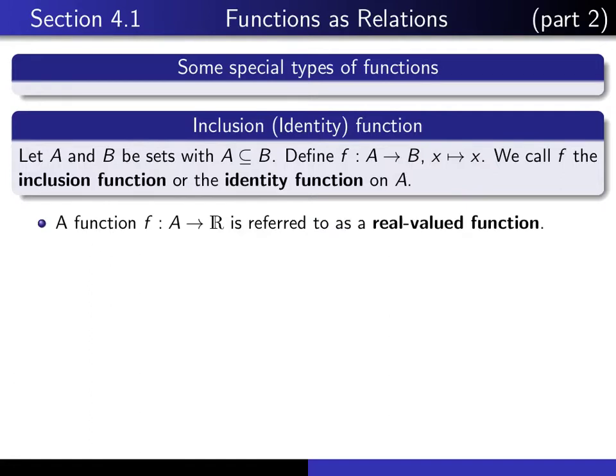If a function has a codomain which is the set of real numbers, then we refer to it as a real-valued function.